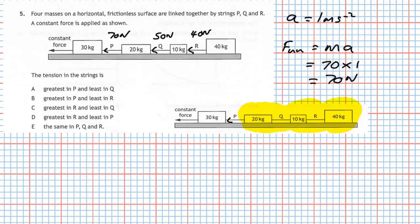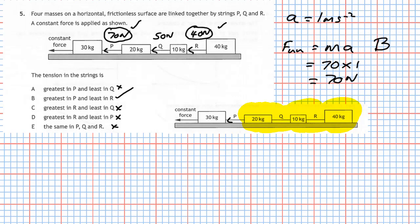Comparing the tensions: P has 70 N (greatest), Q has 50 N, and R has 40 N (least). The tension is greatest in P and least in R, which corresponds to answer B. The key skill in this question is recognizing that all boxes share the same acceleration.